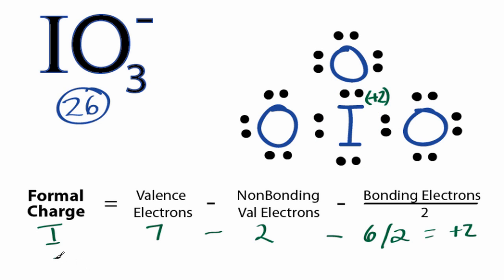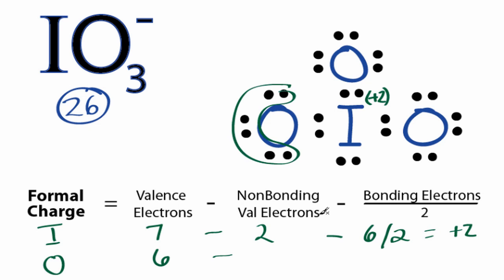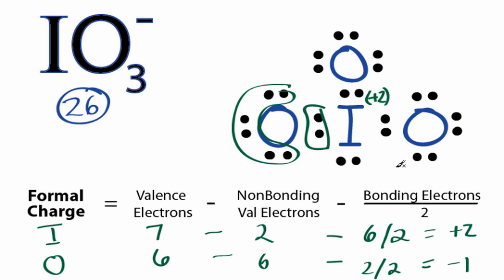For the oxygens — and they're all the same, so we'll just do one. Oxygen has six valence electrons from the periodic table, minus non-bonding: we have six non-bonding, minus bonding: two, divided by two. That gives us a minus one formal charge for each of the oxygens.